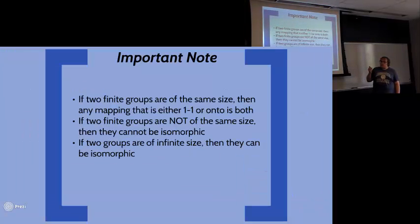It's important to note that if two finite groups are of the same size, then saying it's either one-to-one or onto is also saying it's the other. You can't have groups the same size where the function is one-to-one but not onto, or onto but not one-to-one. But if they're not the same size, they can never be isomorphic, unless they're both infinite in size.